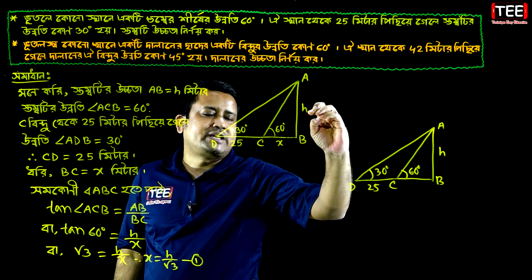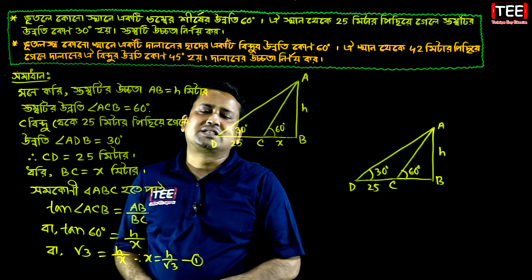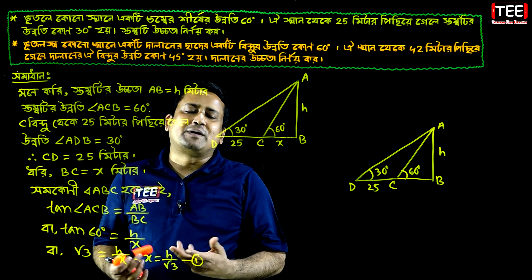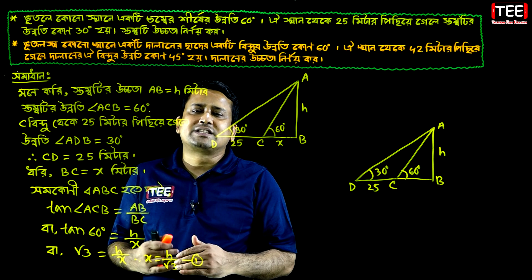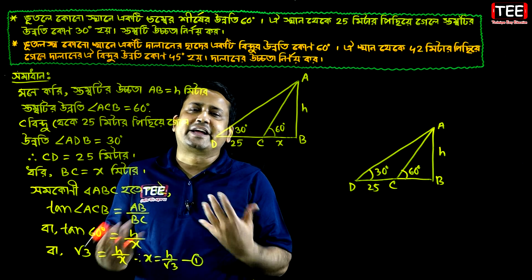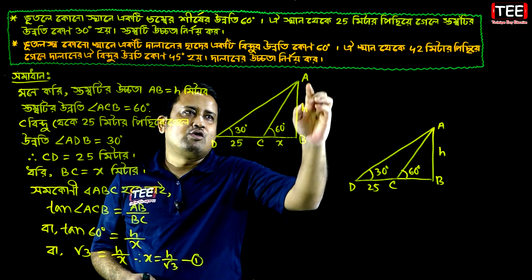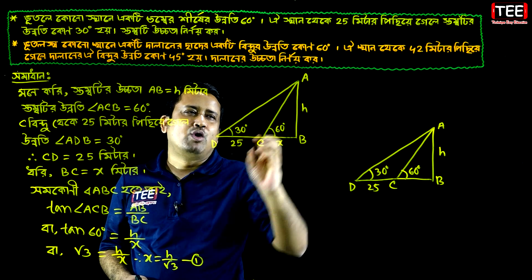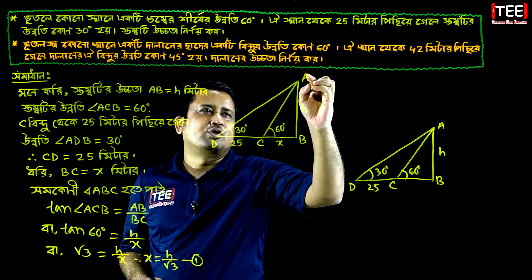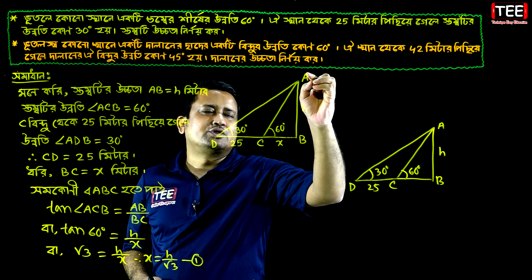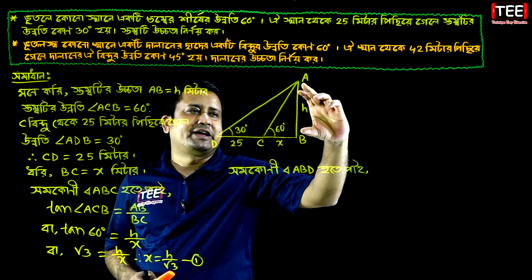X means tan 60 degrees means root 3, so we have to work with root 3.